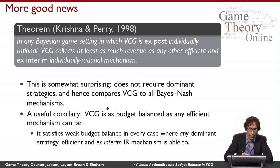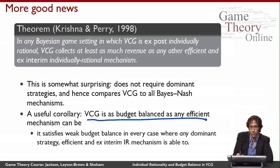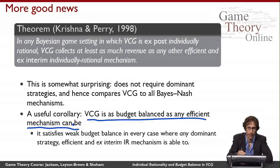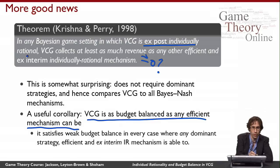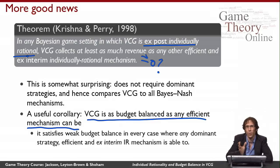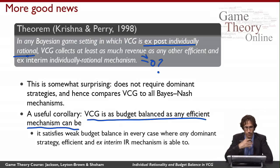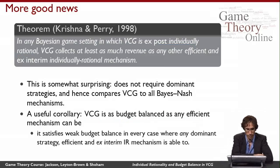A way of understanding this result is that VCG is as budget balanced as any efficient mechanism can be. This doesn't necessarily mean revenue is always non-negative — sometimes it will be and sometimes not. But in cases where revenue is still negative, if VCG was ex post individually rational, no other efficient mechanism gets more revenue. So VCG is always getting as close to budget balance as efficient mechanisms can, as long as VCG remains individually rational.